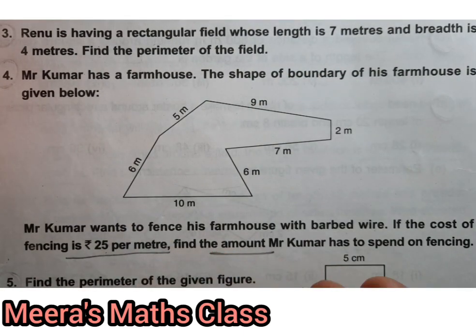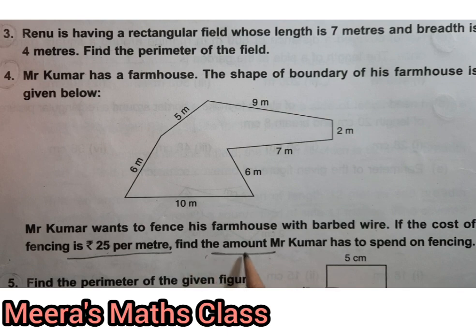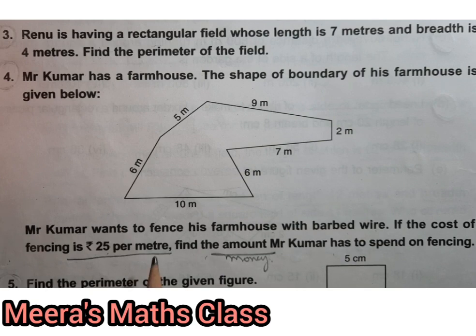This is the main part: that we are not only going to find out the perimeter, but we are going to find out the cost also. How much he is spending? Now first, how to think about the question? Number one, what is asked? Find the amount. We will go back. Okay, find the amount Mr. Kumar has to spend on fencing. Okay, so we are going to find out money. Amount means money.